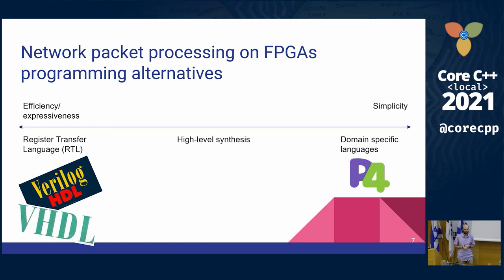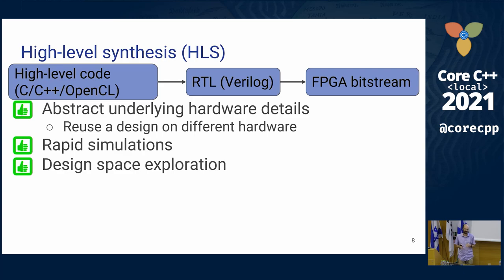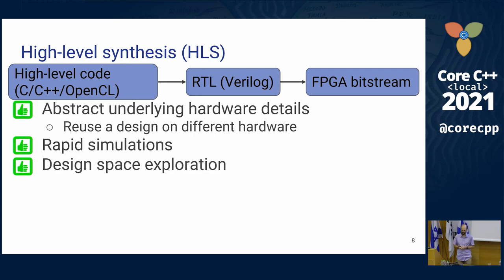This talk is about high-level synthesis, where we use high-level languages such as C++, and turn that into an FPGA program. You can take a high-level description in C, C++, or OpenCL and the high-level synthesis tool converts it to RTL — to Verilog or VHDL. Then you use the standard tools to convert that into an FPGA bitstream you can load into your FPGA.